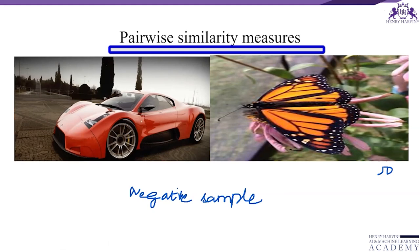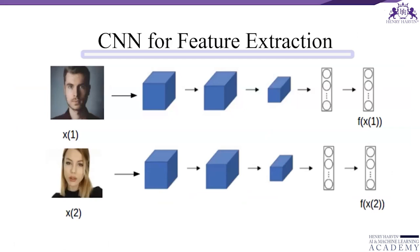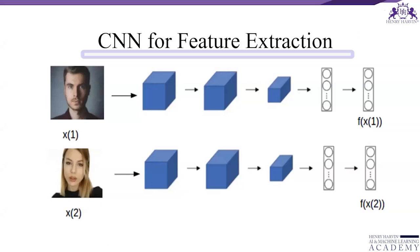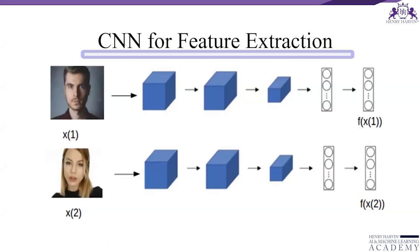We have seen the convolution neural network before. An image is passed to convolution and pooling layers, then maybe flattened, and then we get some feature vector — the output is basically the feature vector. We are training the neural network using training data. We prepare many pairs such as two persons, two cars, or two tigers, along with labels indicating whether they are from the same class.